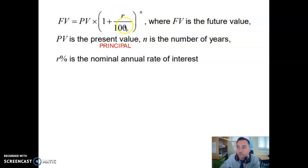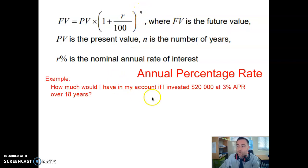Then I've got this 1 plus the interest rate divided by 100 to the power of n, and n is the number of years. Let's look at an example. How much would I have in my account if I invested $20,000 at 3% APR? APR is annual, so yearly percentage rate, and I'm going to do that for 18 years.